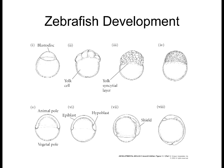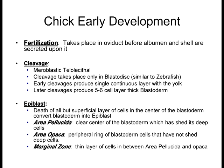Chick development is the closest in terms of patterning to human development, even though chicks are not mammals. If you look at a mouse and how it develops, it's pretty different by comparison in terms of how the germ layers get set up. One of the really important things about early chick development is that the initial stages pattern almost identically to human development in terms of how cleavage occurs and how you form the epiblast and hypoblast.